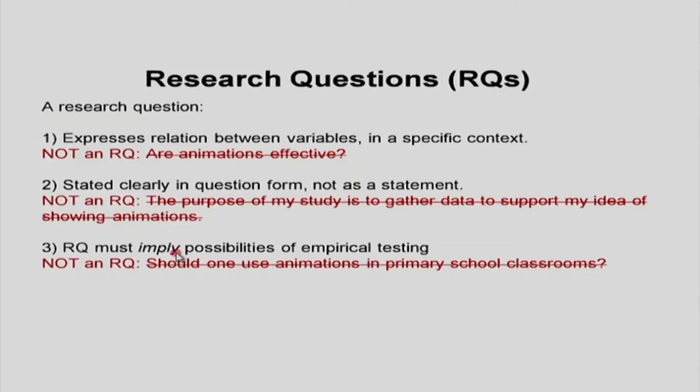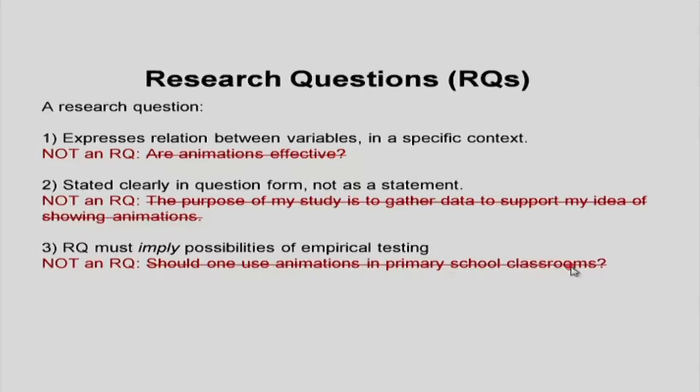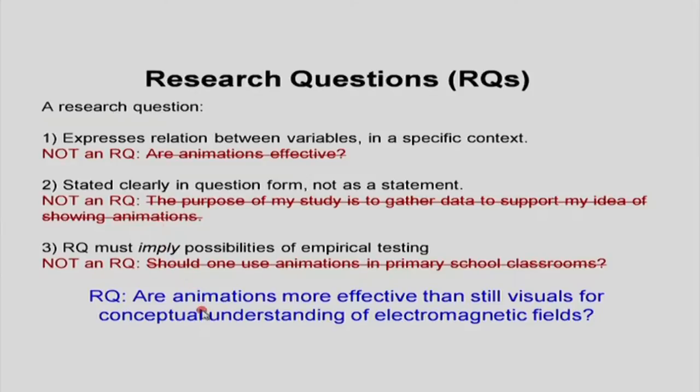Finally, and most importantly — as we also discussed in the think-pair-share activity — a research question should imply possibilities of empirical testing. There should be a possibility that you do an experiment, gather data, analyze the data, make inferences, and draw conclusions. If that possibility does not exist, the question is not worded correctly. For example, 'should one use animations in primary schools?' is not a research question because it cannot be answered using empirical data. The word 'should' implies something very moral and opinionated.